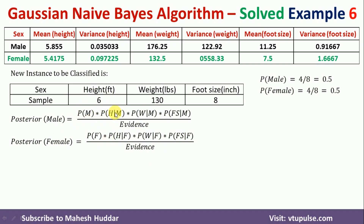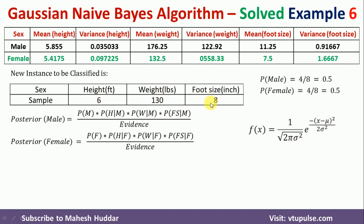To solve these two equations, we need all the probabilities. We know P(male) = 0.5 and P(female) = 0.5, but we don't know P(height|male), P(weight|male), and so on. To calculate these, we use the Gaussian distribution equation: f(x) = 1 / sqrt(2π·σ²) × e^(−(x − μ)² / (2σ²)), where σ² is the variance, μ is the mean, and x is the input. For example, x for height is 6, for weight is 130, and for foot size is 8. The corresponding μ and σ² values are the mean and variance we already calculated.